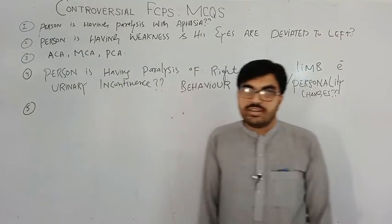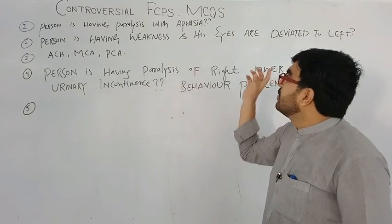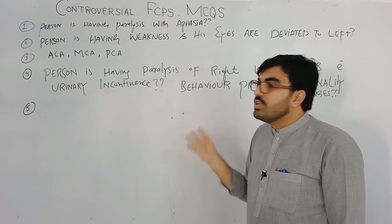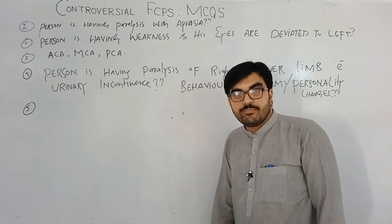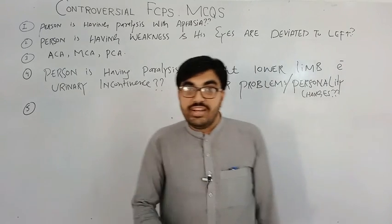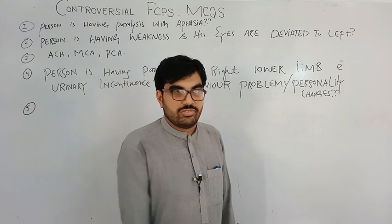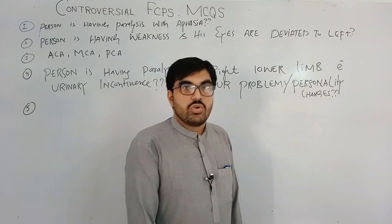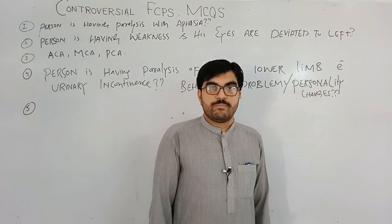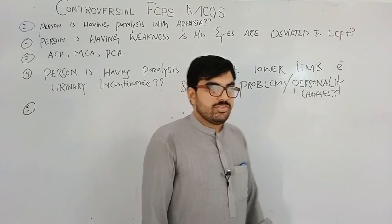This was an FCPS Part 1 MCQ where the only clue given was aphasia, and the answer required identifying the left side as affected, the cortex as the site, and the area supplied by the middle cerebral artery as the specific region involved.